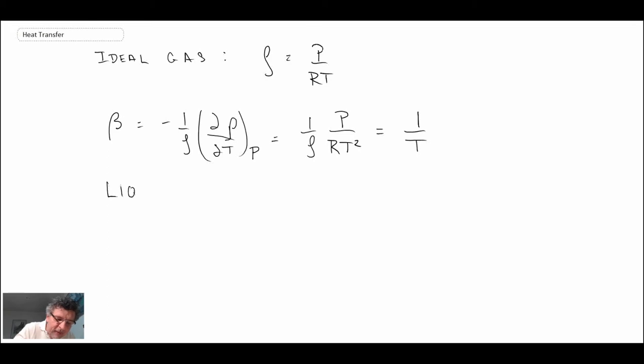If we're dealing with a liquid or a non-ideal gas, in those cases beta would be from property tables. So that's how we handle beta, our volumetric thermal expansion coefficient.